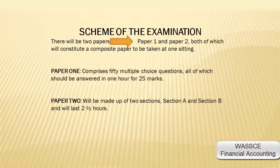The scheme of the examination will be in two papers: Paper One and Paper Two, both of which constitute a composite paper to be taken at one sitting. Paper One comprises 50 multiple choice questions, all of which should be answered in one hour for 25 marks. Paper Two will be made up of two sections — Section A and Section B — and will last for two and a half hours.